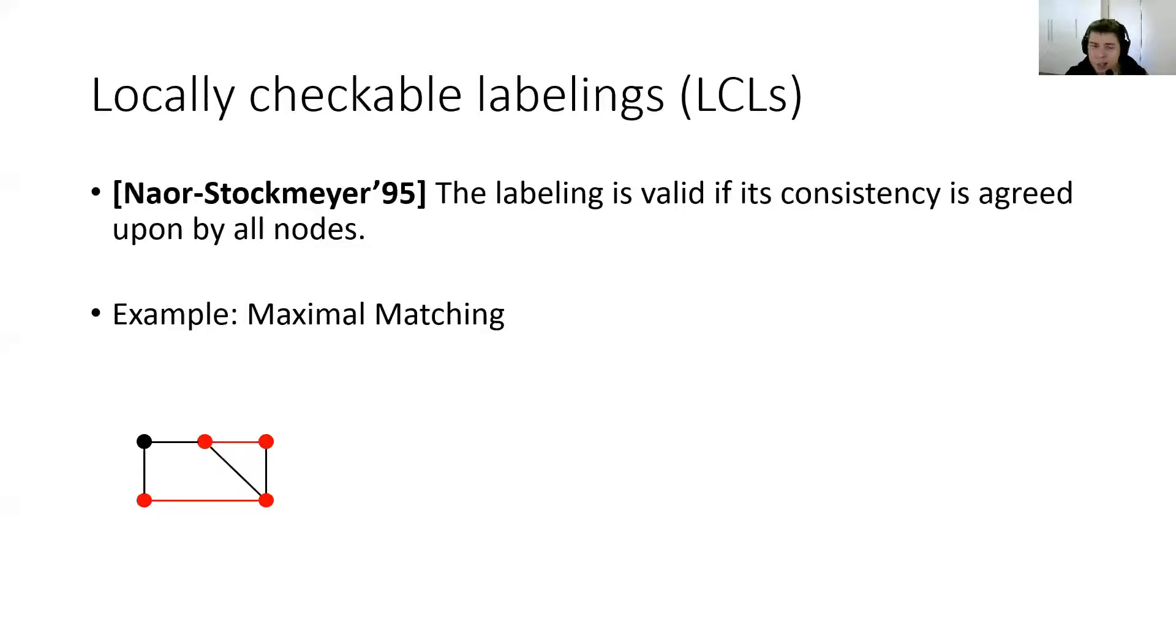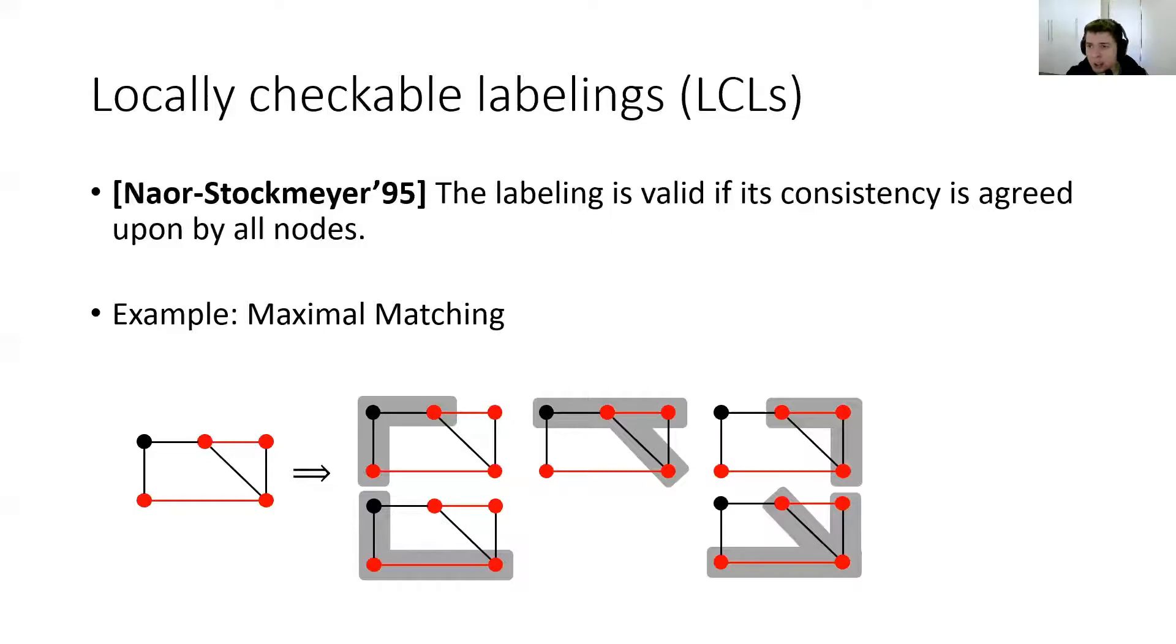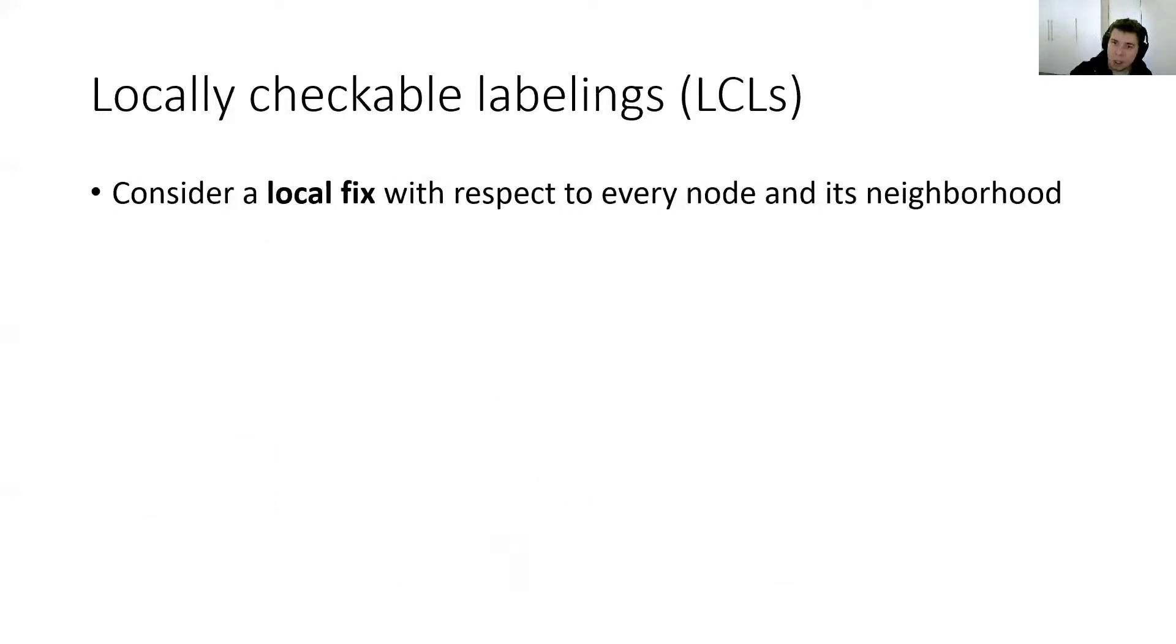As an example of LCL, you can consider maximal matching. The red edges correspond to the matched edges. You can see that in this graph, we do have a maximal matching. If we look at the local view of each node, we can be convinced that it is indeed a maximal matching. All nodes will be convinced, and thus it is indeed a correct maximal matching. It's also easy to see that if the matching was not maximal, then at least one of the nodes will detect this because it would be unmatched and have an unmatched neighbor.